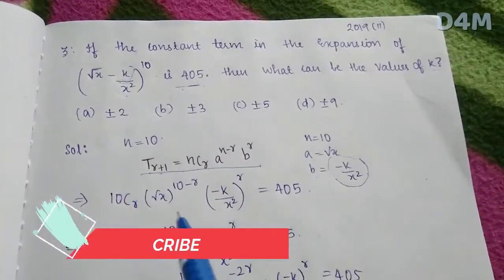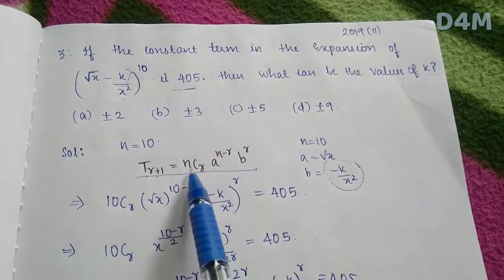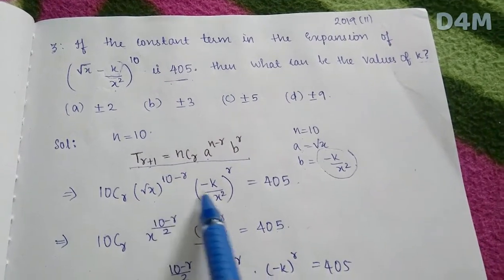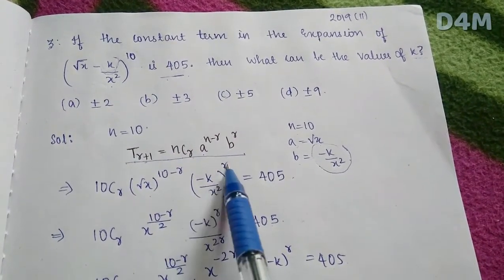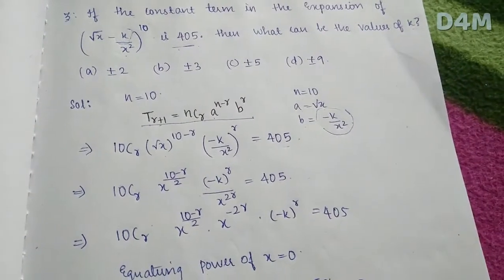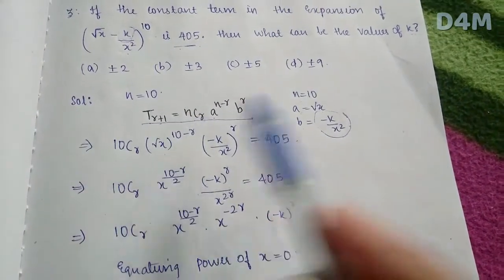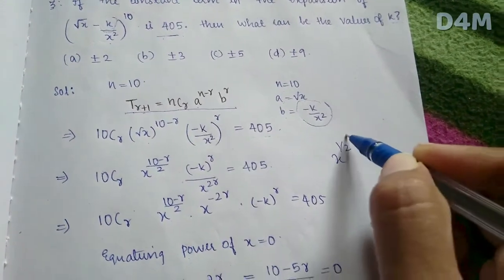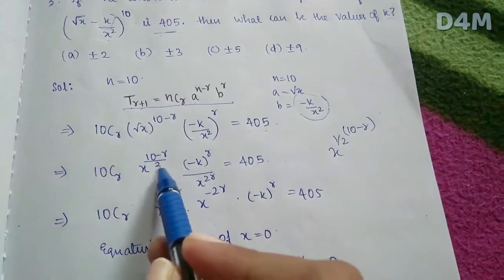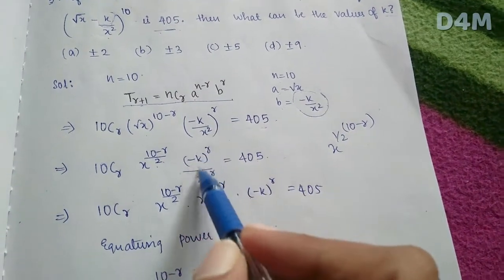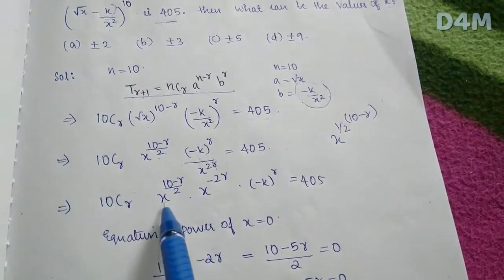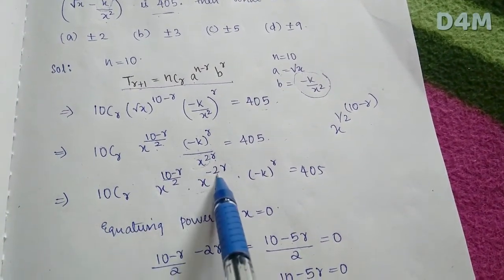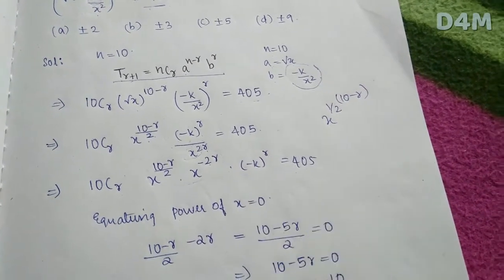We substitute: 10Cr · (√x)^(10-r) · (-k/x²)^r = 4.05. Now √x is x^(1/2), so the power of x becomes (10-r)/2 - 2r, which simplifies to (10 - 5r)/2.